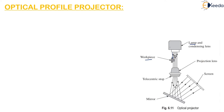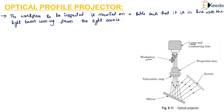The table on which the workpiece is mounted may be stationary or it may be movable. In most projectors the table can be moved in two mutually perpendicular directions in the horizontal plane.